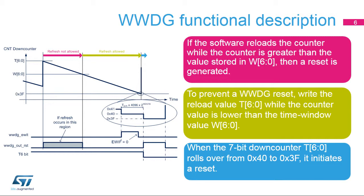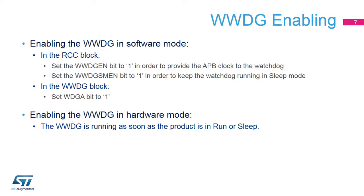No interrupt is generated in this case. To prevent a window watchdog reset, the watchdog refresh must happen while the down-counter value is lower than the window value and greater than 0x3F. This is illustrated by the green area. The refresh operation consists of reloading the down-counter with bits T[6:0].